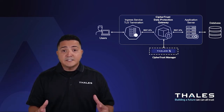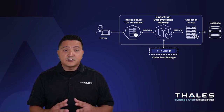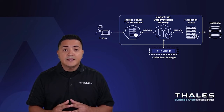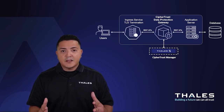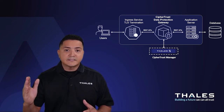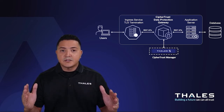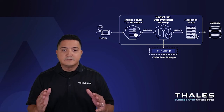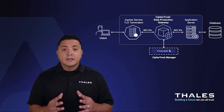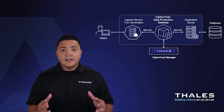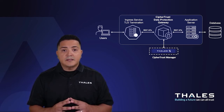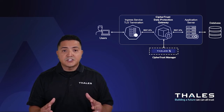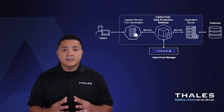At this point, the CypherTrust Data Protection Gateway container is simply proxying traffic between the client and the application without any interruptions. The next step is to start protecting the PII data that the application is collecting, storing, and processing.